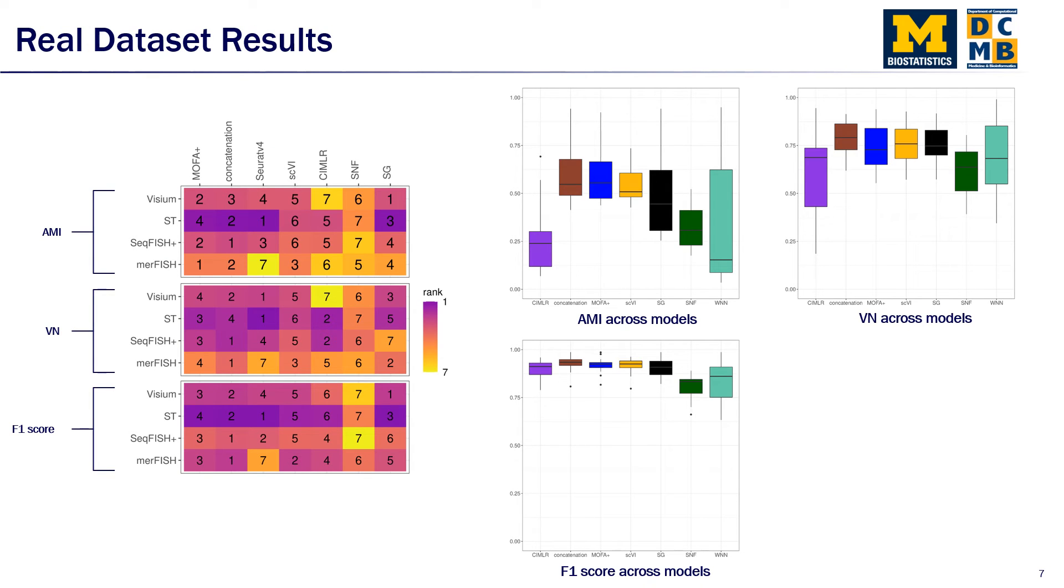Now let's look at the real data set results. In this study, we looked at 19 different real data sets spanning across four different spatial transcriptomics technologies, including Visium and spatial transcriptomics, which are non-single cell resolution data sets, and Seqfish Plus and Merfish, which are single cell resolution data sets. As you can see based on this heat map,